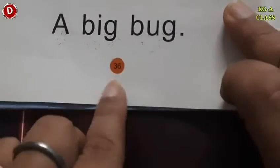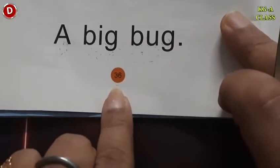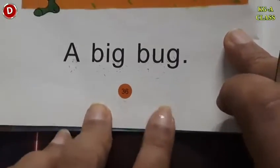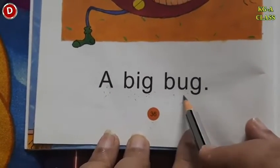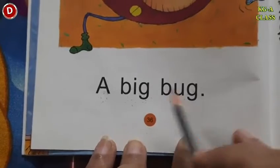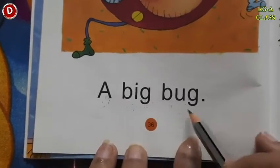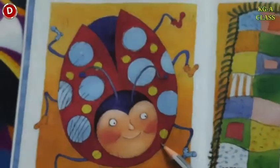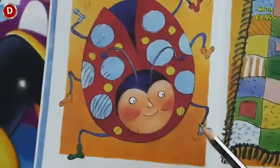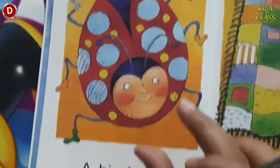Now children, turn the page. Come to page number 36. A big bug, a big bug. Look here children — what is this? This is a bug. Bug means keera. And it is a big bug. It is not small, it is a big bug.